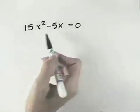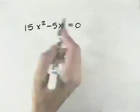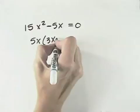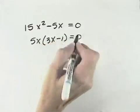Looking at this one, we have 15x squared minus 5x equals 0. We have a common factor of 5x. Taking that out, we're left with 3x minus 1 equals 0.